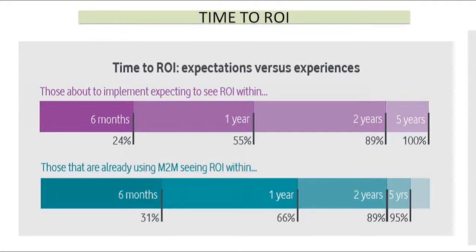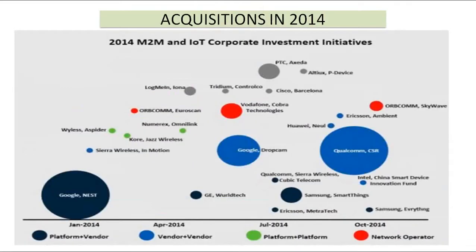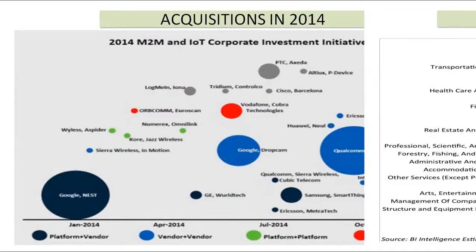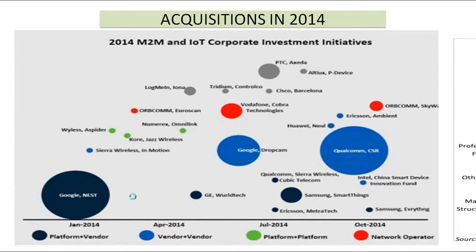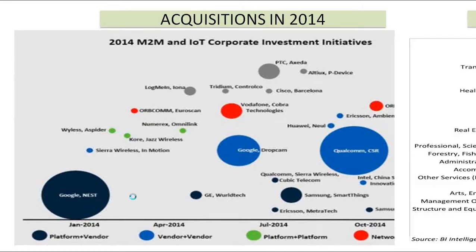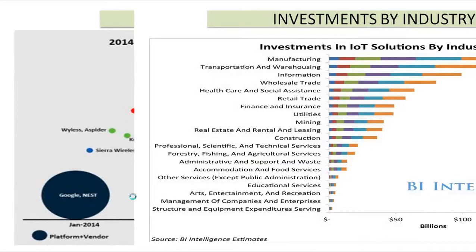IoT is going to have a clear ROI for industry. There are a lot of companies being acquired that work in the IoT space — Google and Qualcomm acquiring CSR, Apple has acquired a couple of companies. Small companies are being acquired by large companies focusing on IoT. Investment by industry: manufacturing is going to have a big investment in IoT going forward.